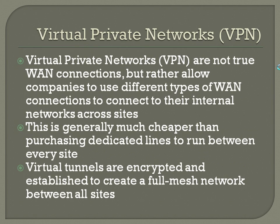Virtual private networks, or VPNs — the last chapter of the book will get into this more extensively. They're not true WAN connections, but rather allow companies to use different types of WAN connections to connect to their internal networks across sites. This is generally much cheaper than purchasing dedicated lines to run between every site. Virtual tunnels are encrypted and established to create a full mesh network between all sites. Usually you purchase some type of WAN connection — whether it's a dedicated line, cable Internet, or DSL — and then each of your individual users will build a tunnel that connects to a concentrator or other device so they can all enjoy the private network for your company over that public WAN connection.